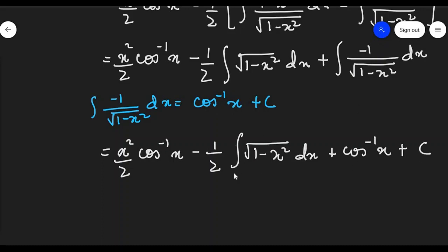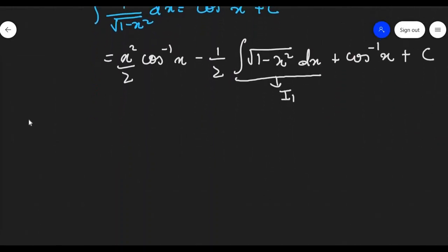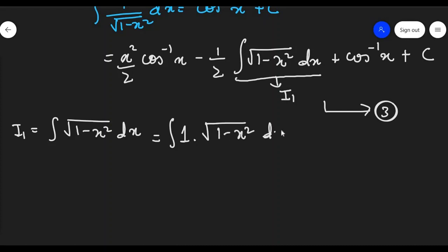We need to find this remaining integration. Let us call it I1, and call the current expression equation number 3. So I1 equals integration of square root of 1 minus x squared dx. To integrate this, we are going to use integration by parts again. We need a second function, so let the second function be 1, giving 1 into square root of 1 minus x squared dx. The first function — easier to differentiate — will be square root of 1 minus x squared.